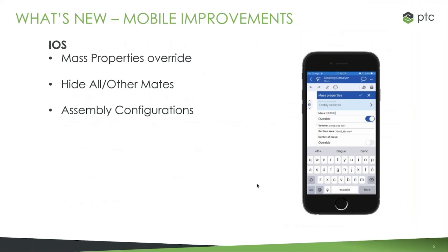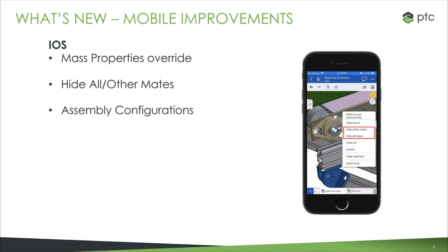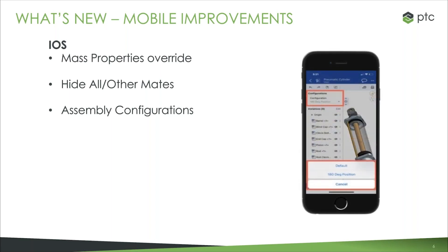Back to the presentation — that's the last of the live demos. The rest of these updates I'm going to just talk through. There were some mobile improvements added to the iOS system in the last two releases. The first is that we added the mass property override to the iOS interface, so you can override your mass properties. Additionally, while working inside of a model and an assembly, you can hide all or other mates if you have mates displaying. And finally, you have the ability to change configurations of an assembly while inside of the iOS application now.